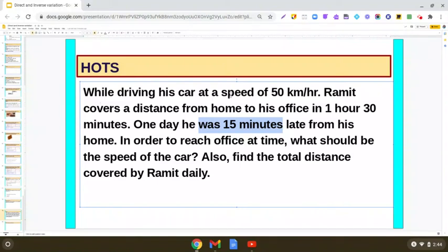While driving his car at a speed of 50 km per hour, Ramit covers a distance from home to his office in 1 hour 30 minutes. One day he was 15 minutes late from his home. In order to reach office at time, what should be the speed of the car?